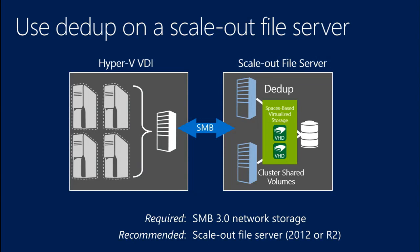The file server, on the other hand — if you're running Hyper-V on Server 2012, it runs just fine against SMB as the storage, and has the capacity to keep up with deduplication because you're not using the CPU utilization needed for your Hyper-V guests. So the requirement is an SMB3 remote connection and network storage. The recommendation is to put this on a scale-out file server.